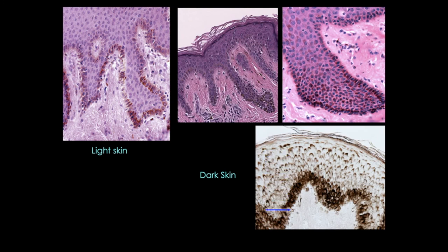Comparing light skin to dark skin, there's clearly more pigment and more melanin in dark skin. But this doesn't actually mean more melanocytes. In fact, melanocyte number is about the same in all skin types. We see increased melanin, but it depends upon a number of different factors.